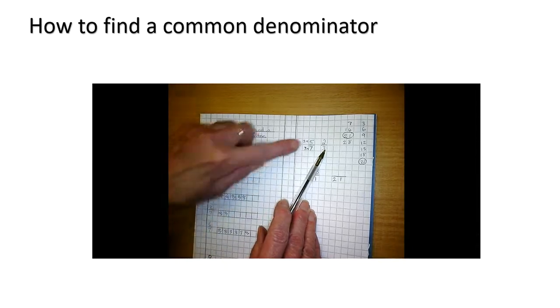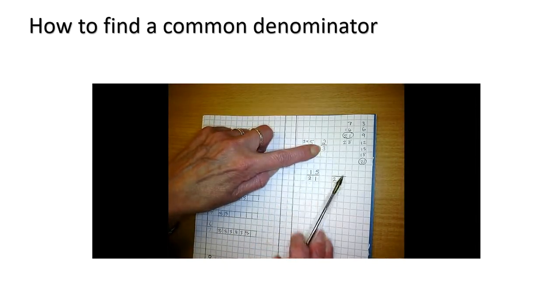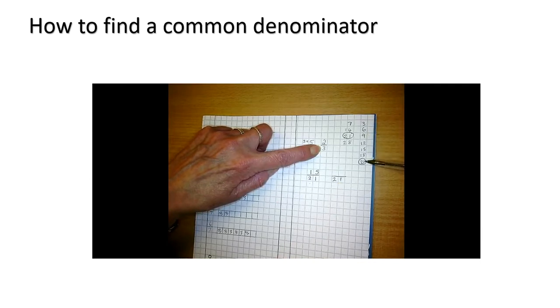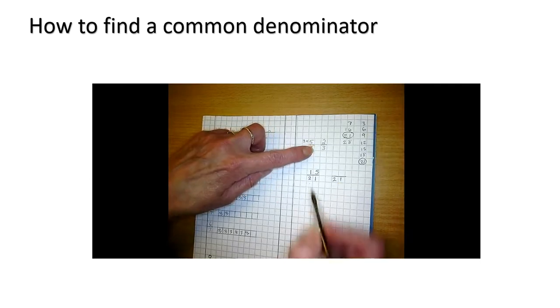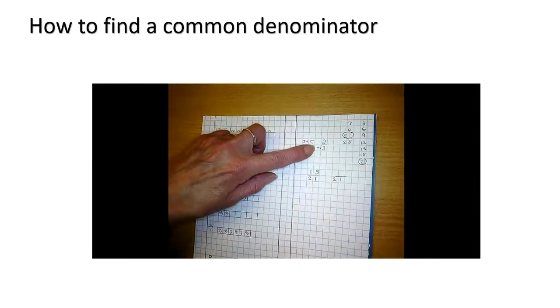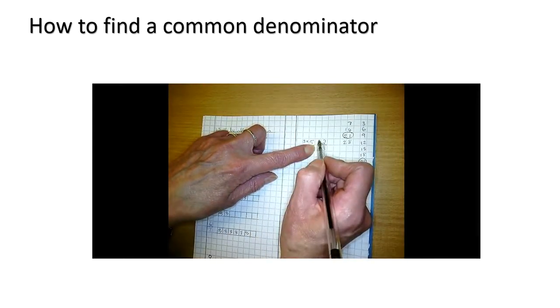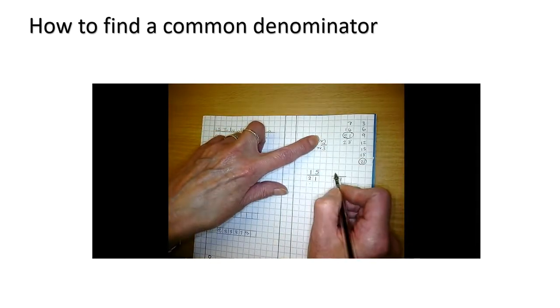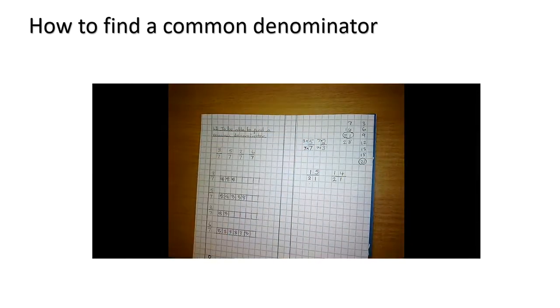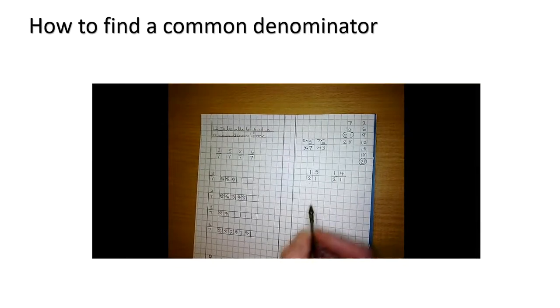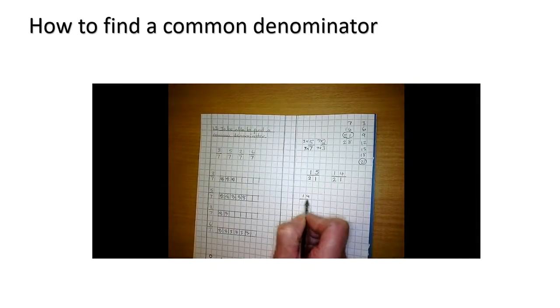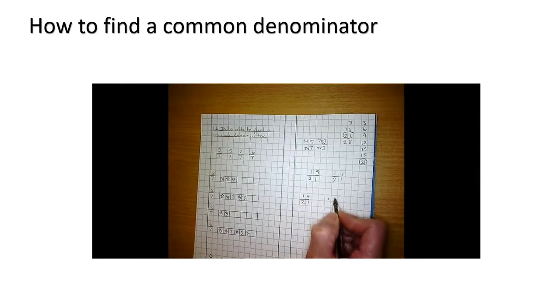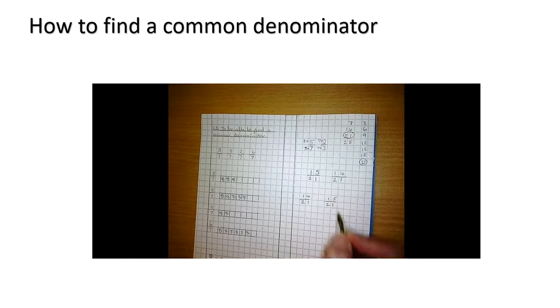Now, my 3s. How many times did I multiply my 3 to get to 21? 1, 2, 3, 4, 5, 6, 7. 7 times 3 is 21. So I know that I multiplied my 7 by 3. What I do to my denominator, I must do to my numerator. So I am going to multiply my 2 by 7. 7 times 2 is 14. Now,